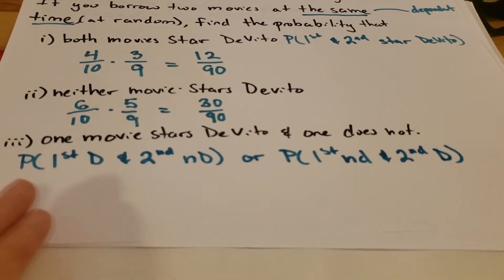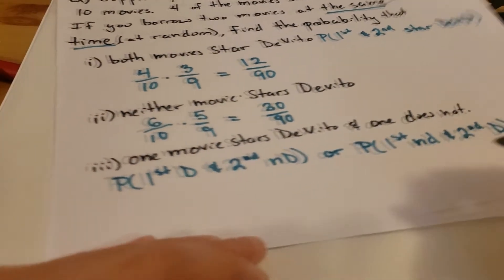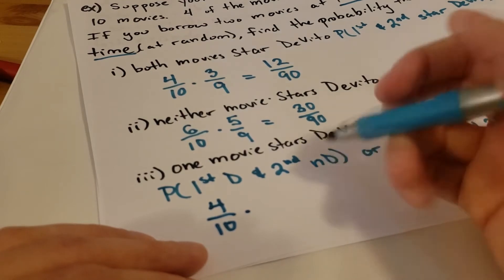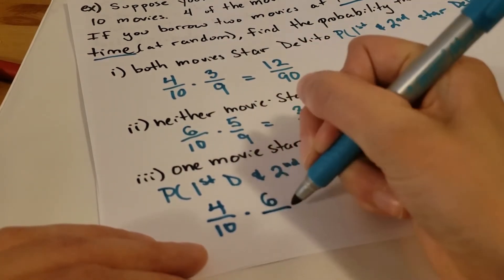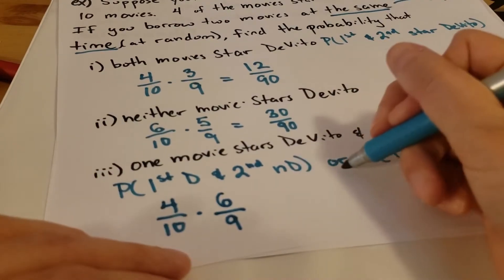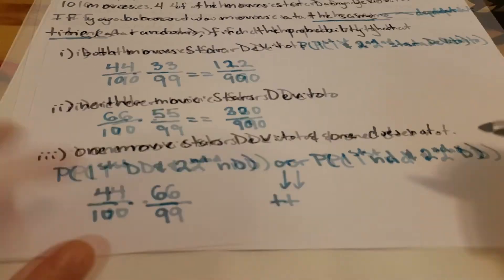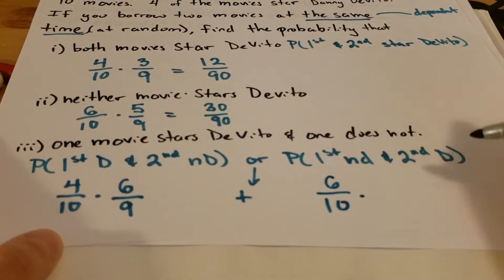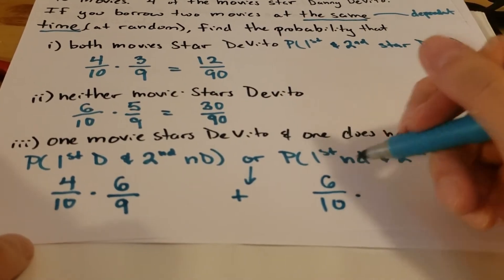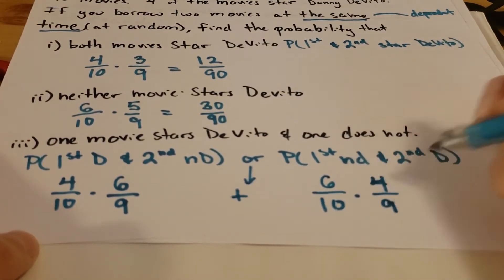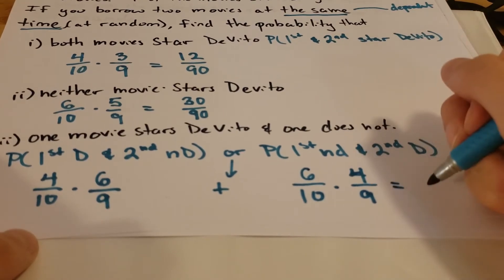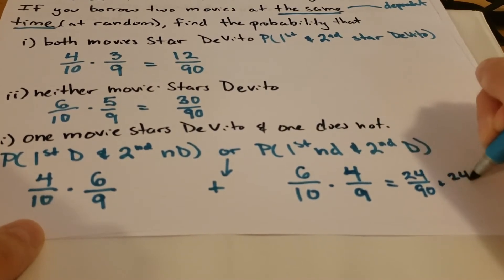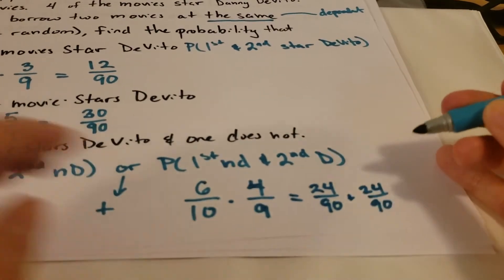So this is: probability the first stars DeVito and second does not (ND), or probability the first doesn't have DeVito and the second does. If the first movie stars him, that probability is four out of ten. The second movie not starring him — all six non-DeVito films are still in, but we only have nine movies left, so that's six out of nine. Since we have an 'or,' we add the two probabilities. Probability DeVito is not in the first is six out of ten, and he is in the second given he wasn't in the first is four out of nine. We get 24 over 90 plus 24 over 90, which gives us 48 out of 90.